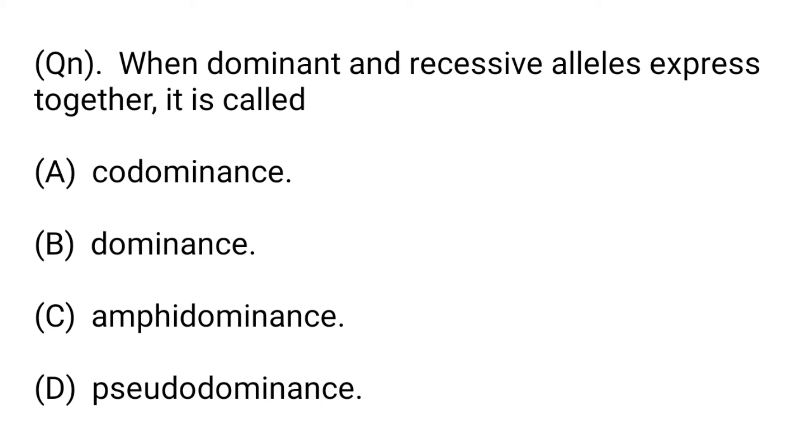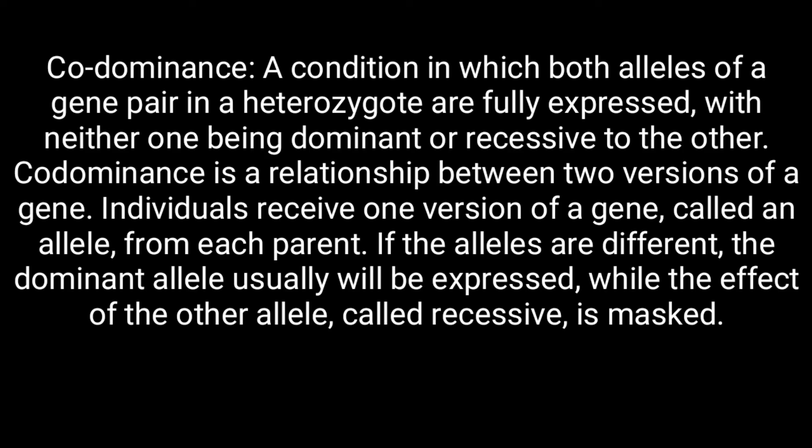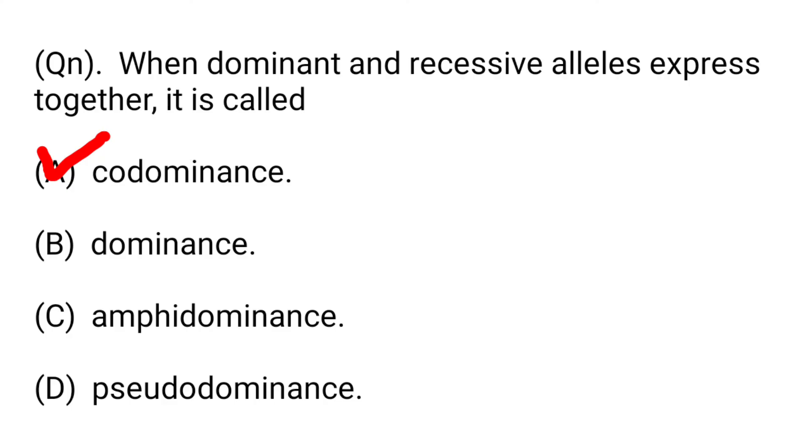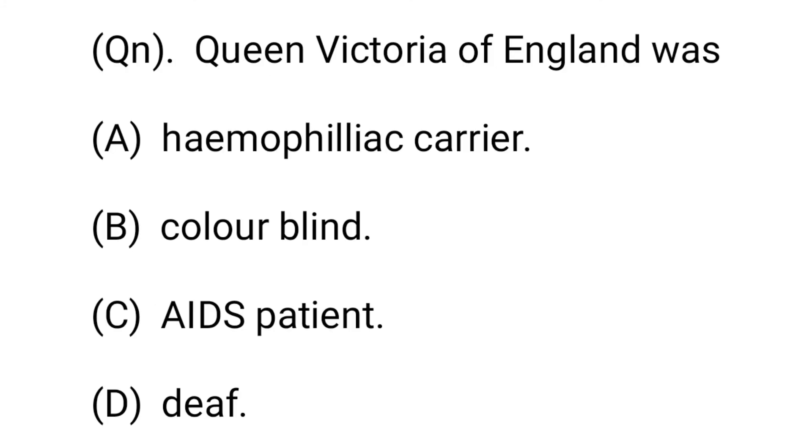Next question: When dominant and recessive alleles are expressed together, it is called: Option A: codominance. Option B: dominance. Option C: amphidominance. Option D: pseudodominance. Codominance is a condition in which both alleles of a gene pair in a heterozygote are fully expressed, with neither being dominant or recessive to the other. Option A, codominance, is the right answer.